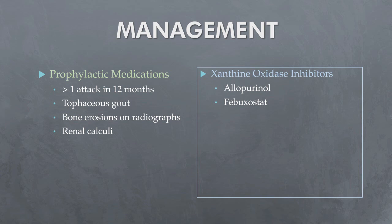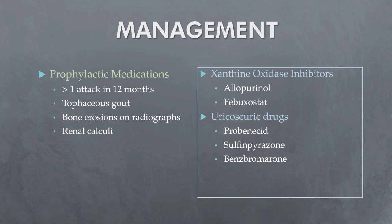Febuxostat, another xanthine oxidase inhibitor, is an alternative to allopurinol when allopurinol is contraindicated or not tolerated. It undergoes hepatic metabolism and no dose adjustment is required for renal impairment. It is more effective at reducing serum urate than allopurinol, but the number of acute attacks with both medications is the same. Uricosuric drugs increase urate excretion but are seldom used in routine clinical practice; these include probenecid, sulfinpyrazone, and benzbromarone. They are contraindicated in overproducers and those with renal impairment or urolithiasis, and their use requires patients to maintain a high fluid intake. Pegloticase is a biological treatment in which the enzyme uricase oxidizes uric acid to 5-hydroxyisourate, which is then converted to allantoin. It is indicated for tophaceous gout resistant to standard therapy and is highly effective at controlling hyperuricemia.